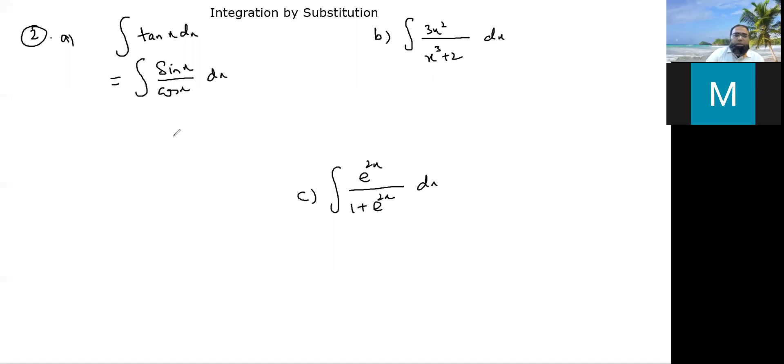Okay, now you have tan x, which is sine x over cos x. These are all examples that you can easily integrate through that result, like this can be something ln cos x, this can be something ln x cubed plus 2, and this is something ln 1 plus e raised to 2x.